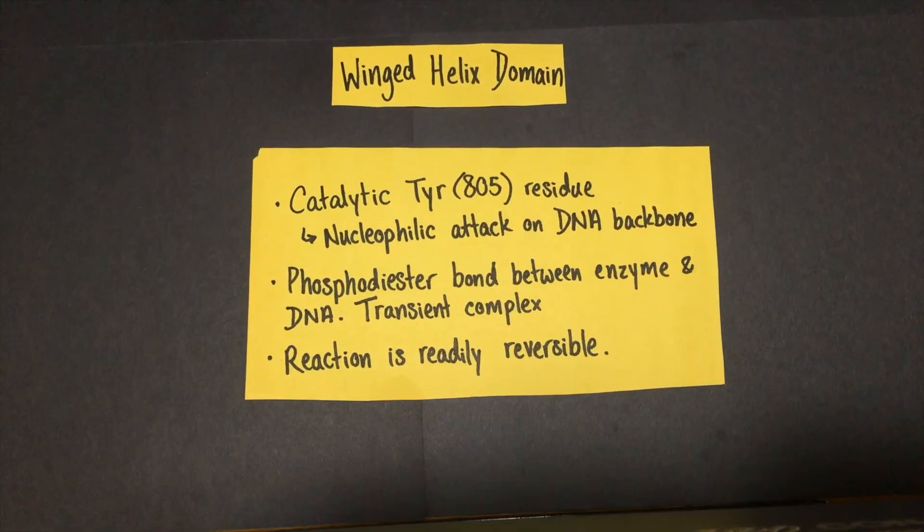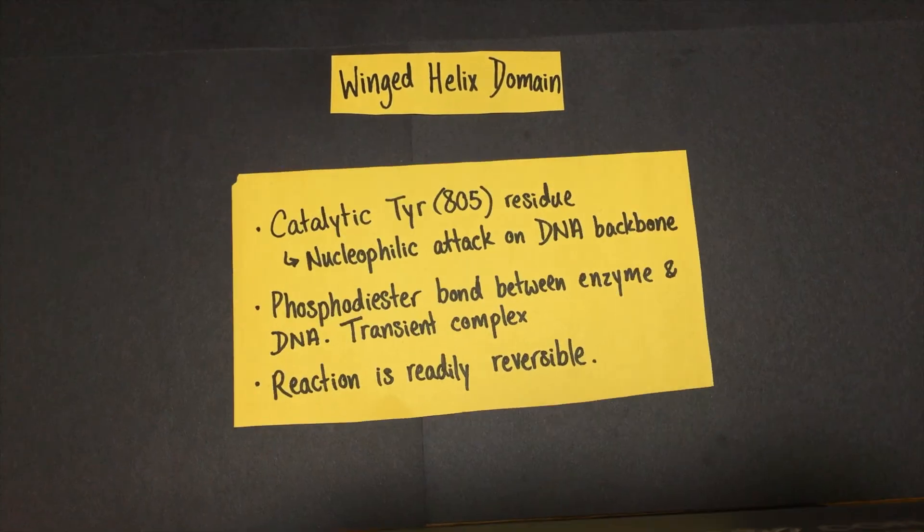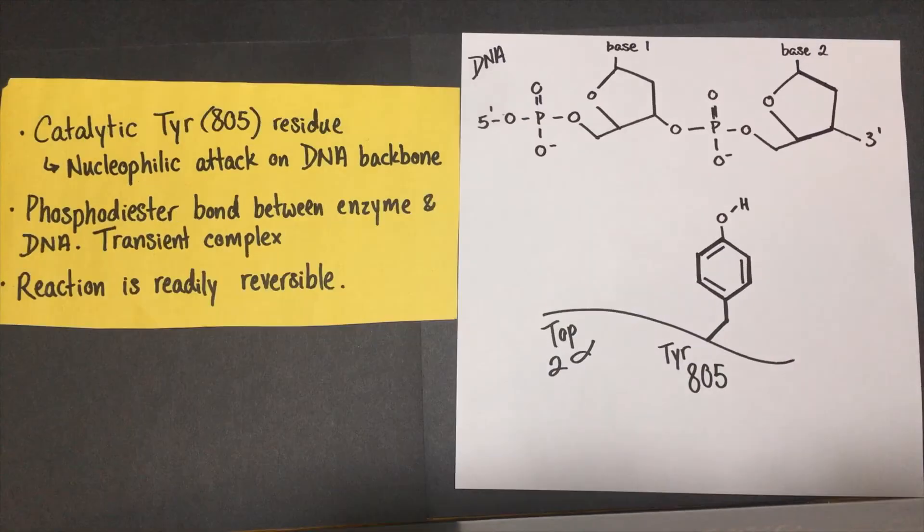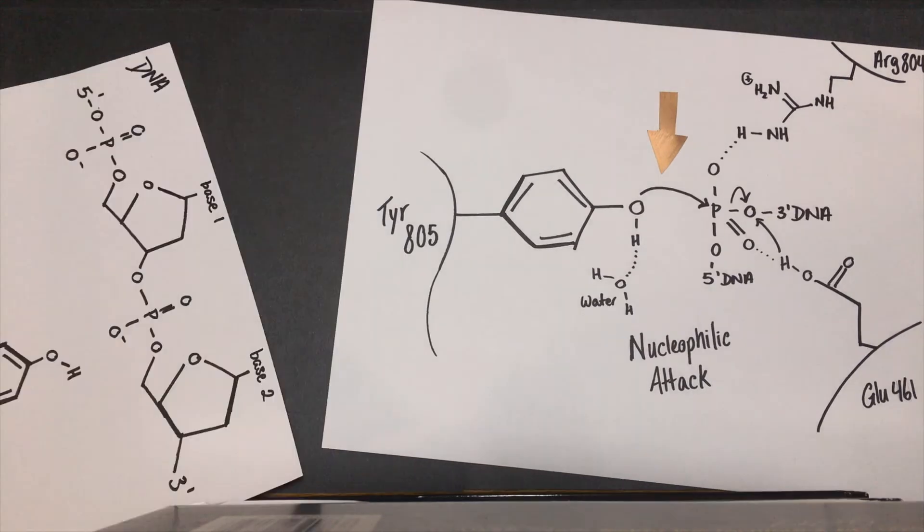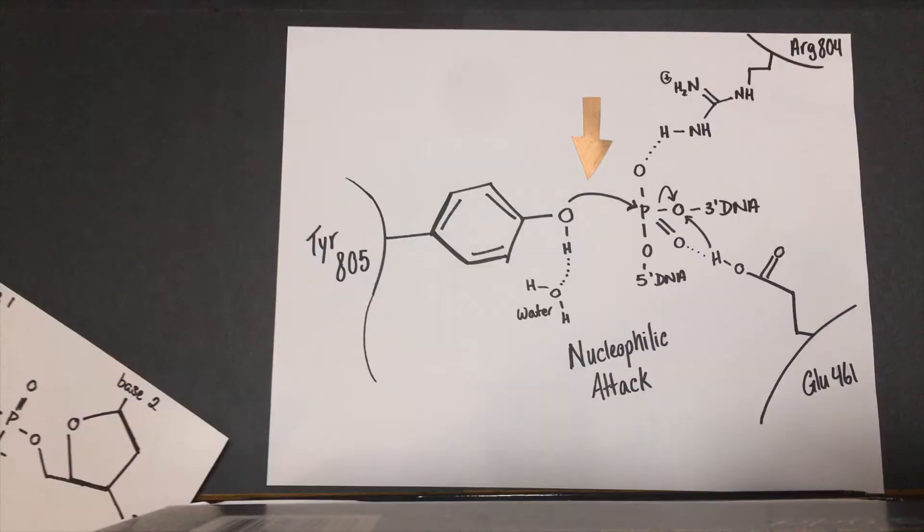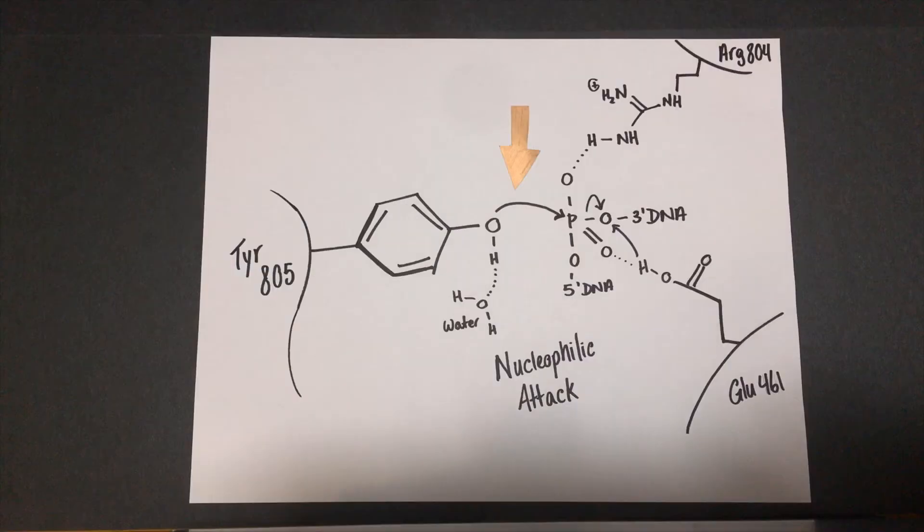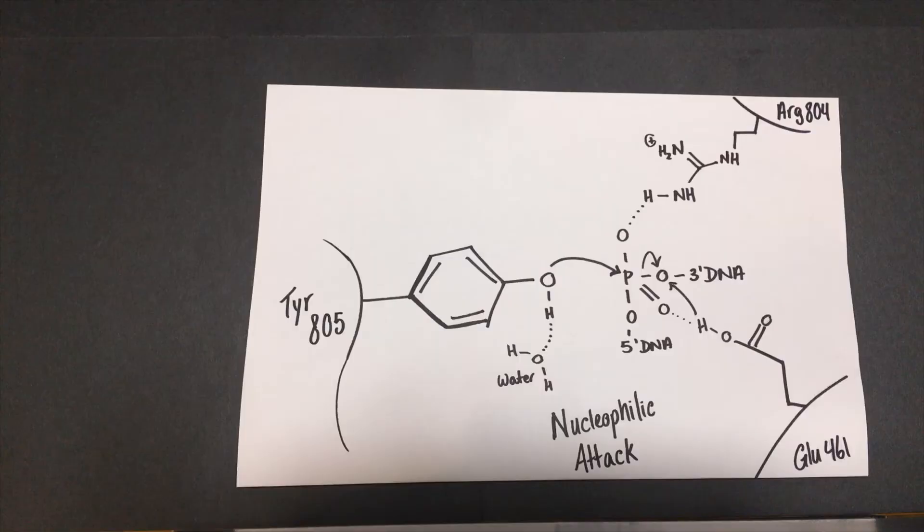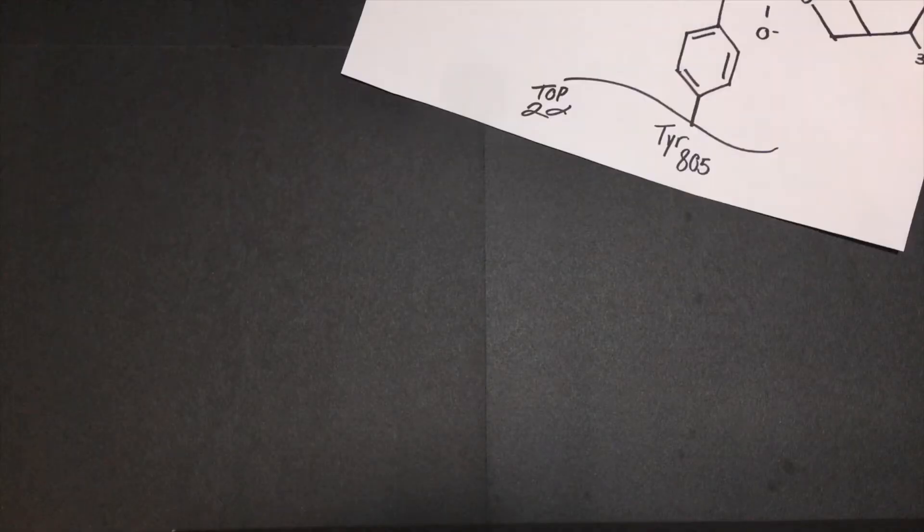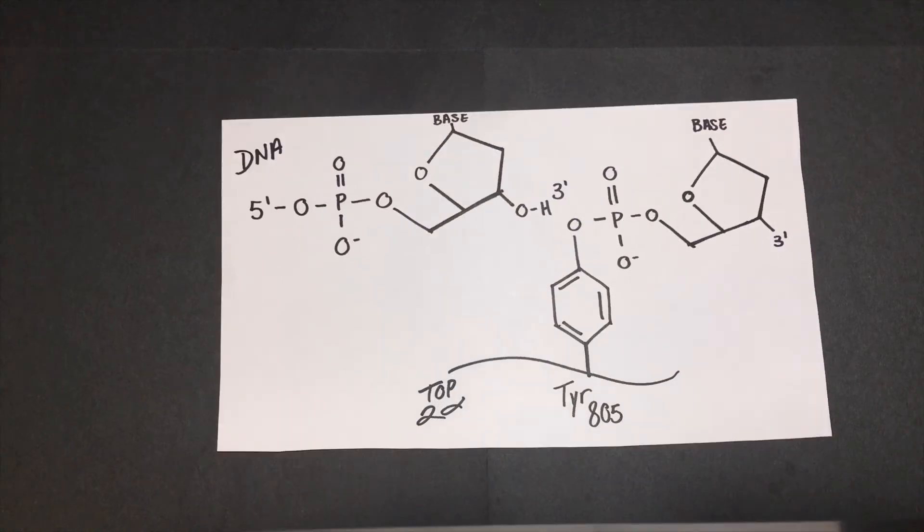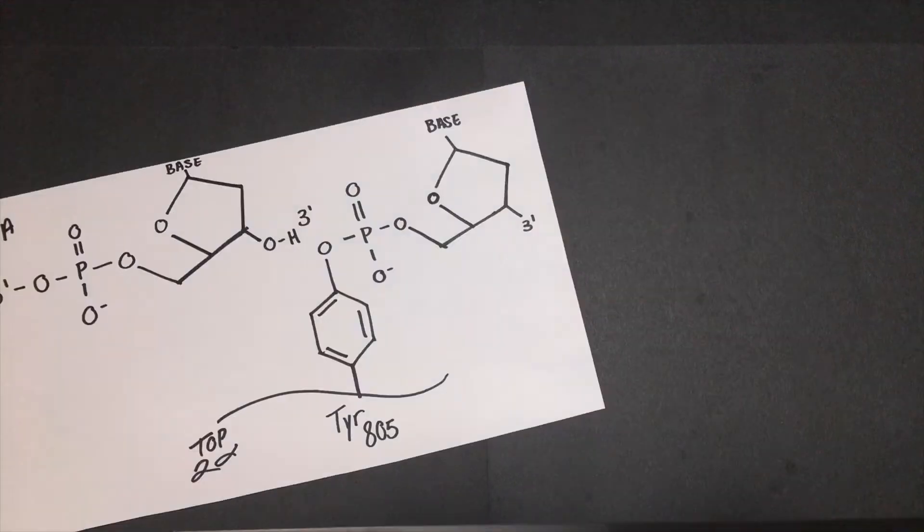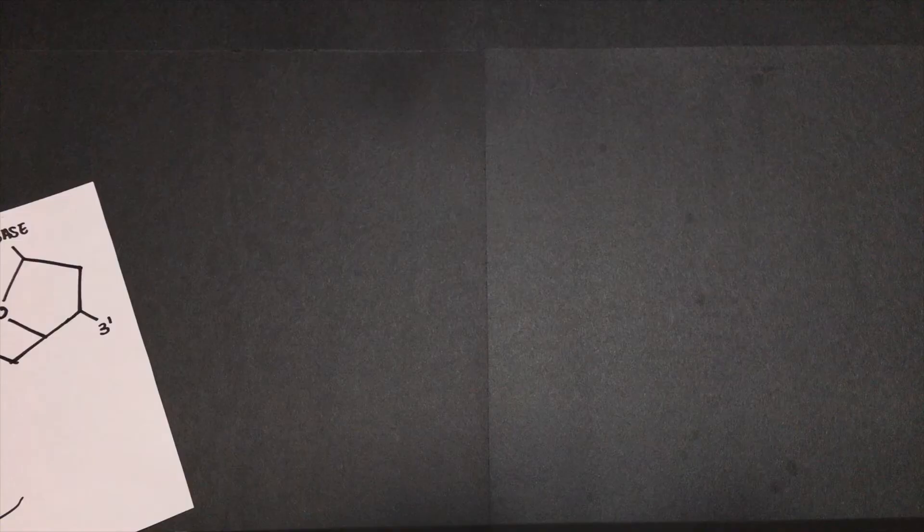The winged helix domain contains a catalytic amino acid residue, tyrosine 805, which carries out a nucleophilic attack on the DNA backbone, creating a phosphodiester bond between the DNA and enzyme. This activity is readily reversible as Top 2a is responsible for cleaving DNA and resealing it once it has relieved tension between the two duplexes. The winged helix domain is also super special in the sense that its catalytic region will only take on very specific configurations, and this actually helps couple DNA cleavage status with allosteric control over the C gate where both duplexes leave.